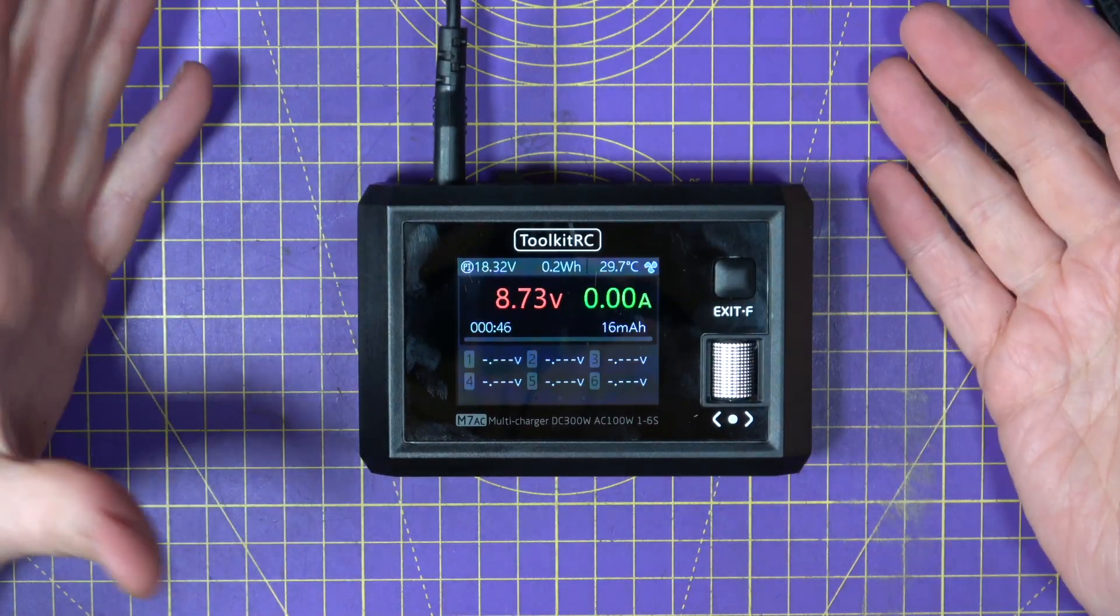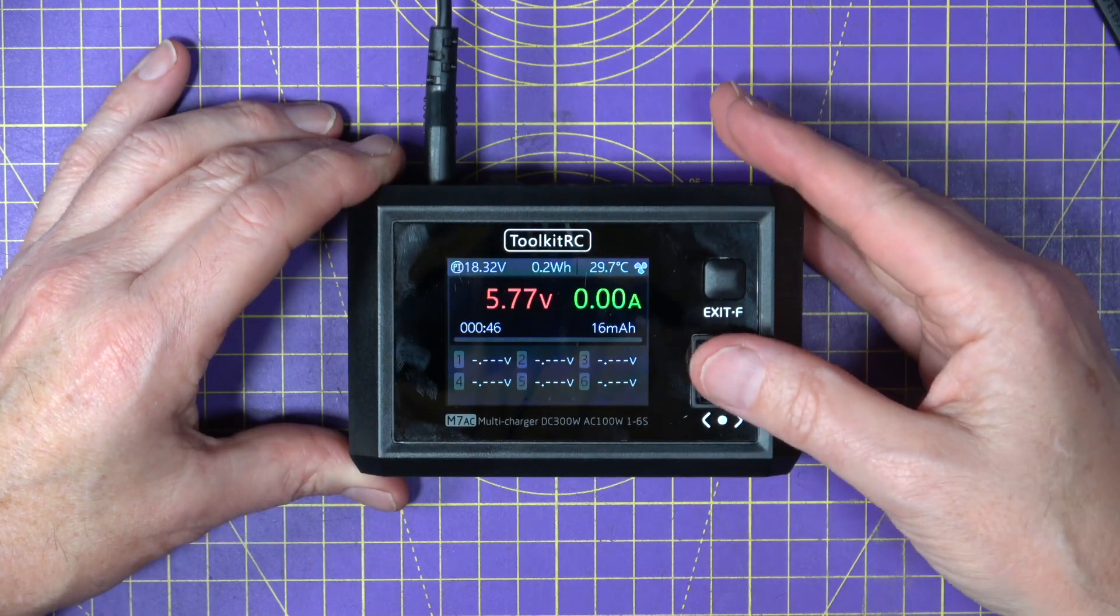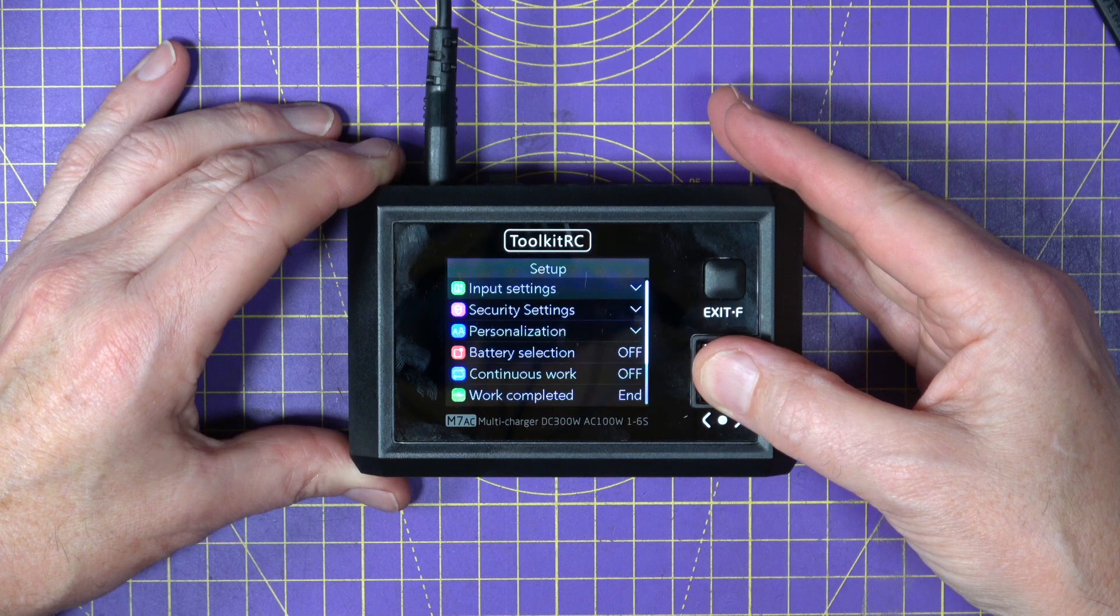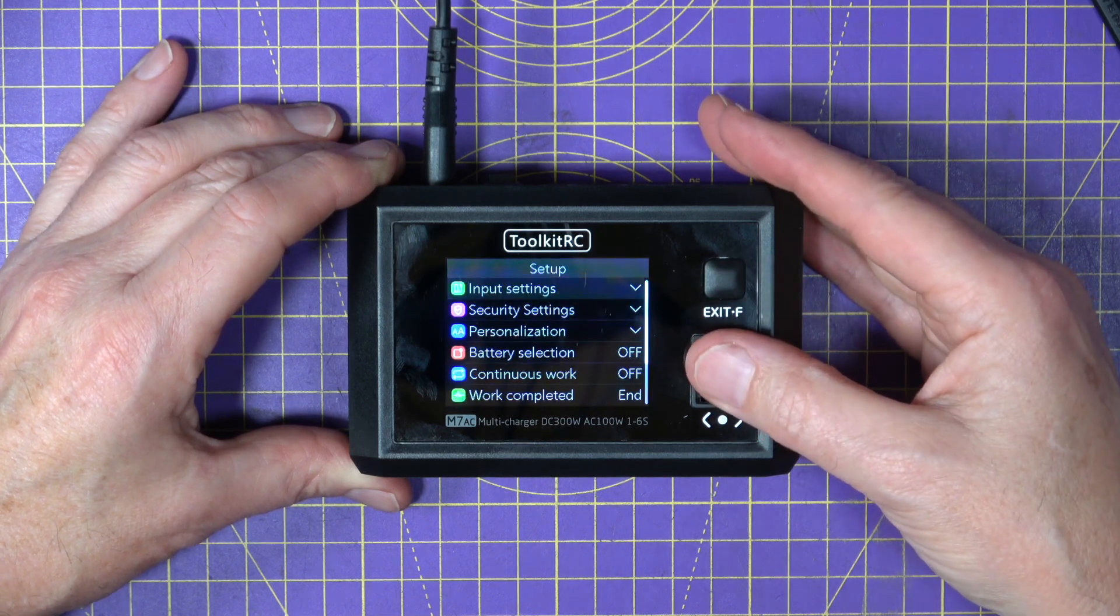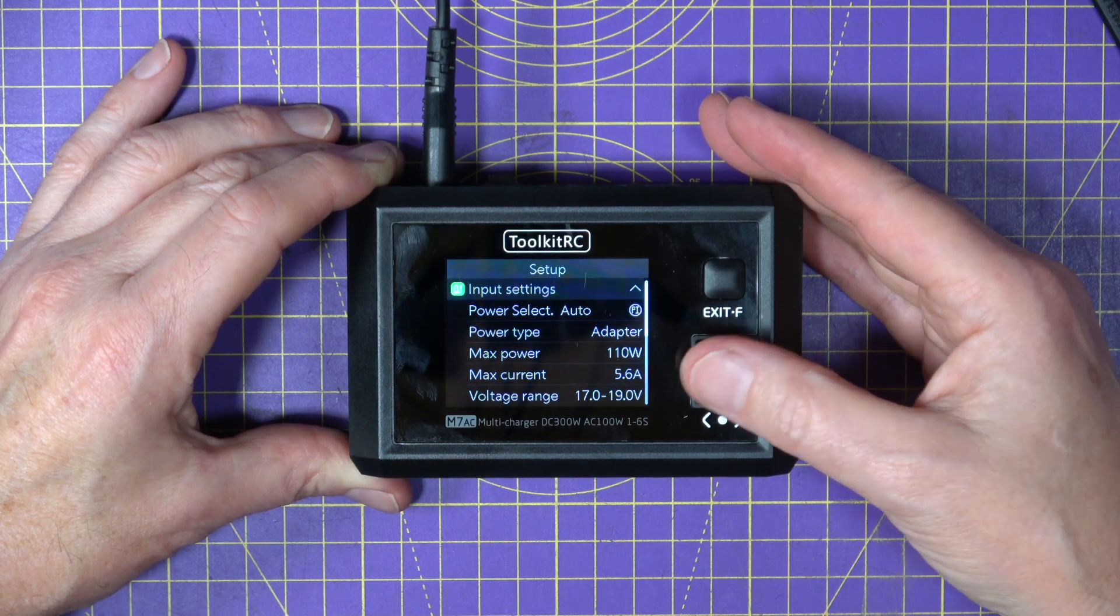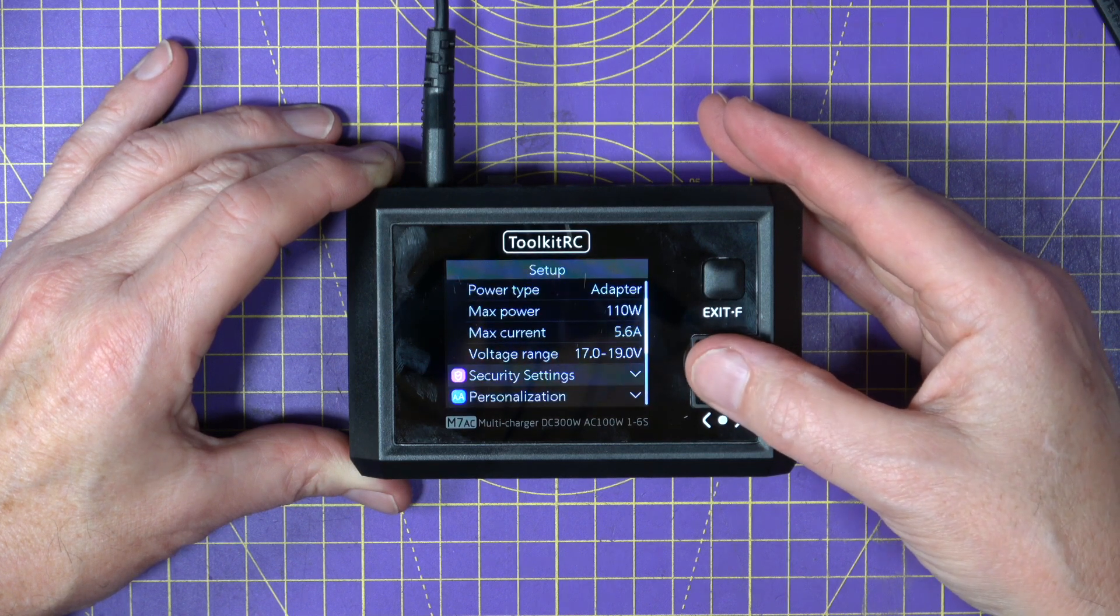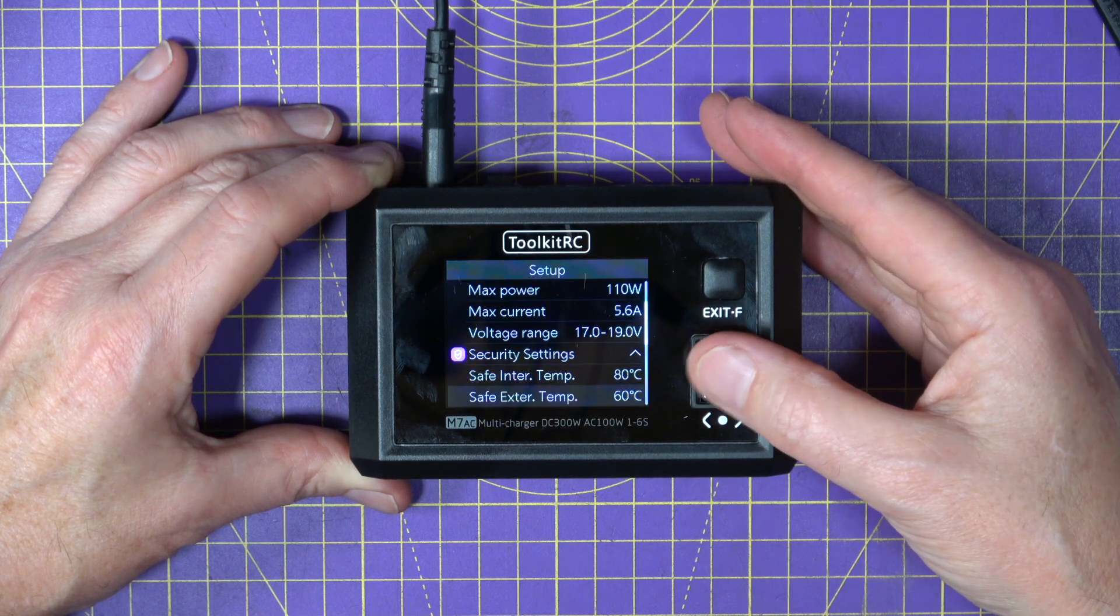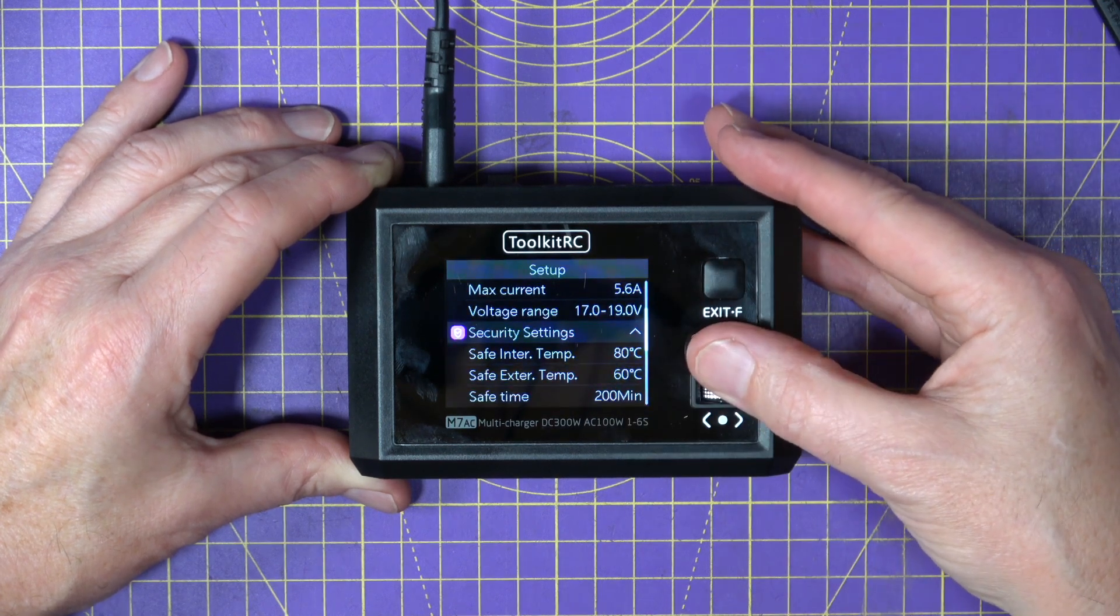Now there are a whole load of settings associated with this charger, very easy to use. Just long press the scroll wheel and you can see here there's an impressive set of different settings. So we've got the input settings, maximum power, input voltage range etc., some security settings which is all to do with safe temperatures, you can set those to whatever you want.